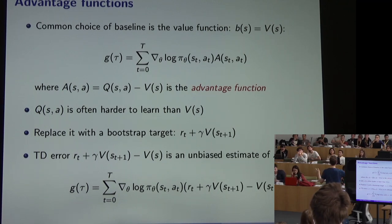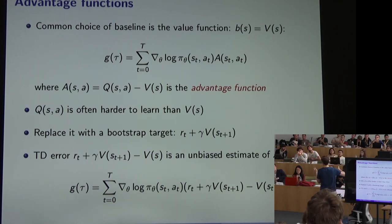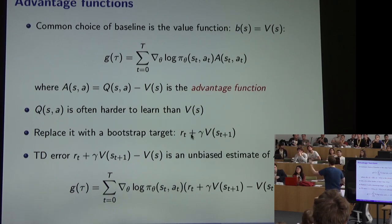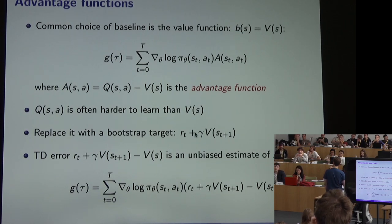With REINFORCE we used the whole sample return to construct the gradient estimate. With actor-critic we went to the other extreme and used only the learned critic. Now we take one step back toward REINFORCE: we use one sample reward — not the whole return — and then bootstrap, accepting a bit more variance but avoiding the need to represent the more complex Q function.